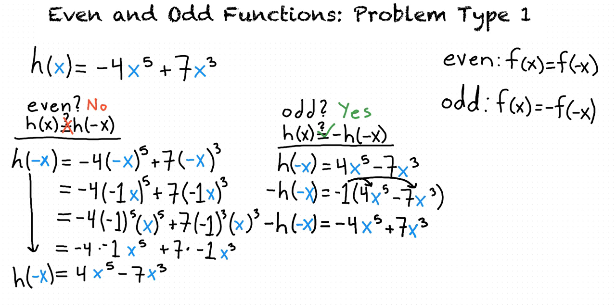Is there a way we can tell if a polynomial is even or odd without doing all of that work? One way to quickly figure out if a polynomial is an even or an odd function is to look at the exponents of each of the terms. If all of the exponents are even, then it's an even function. And if all of the exponents are odd, then it's an odd function. In our example, all of the exponents were odd, which means that this is an odd function.